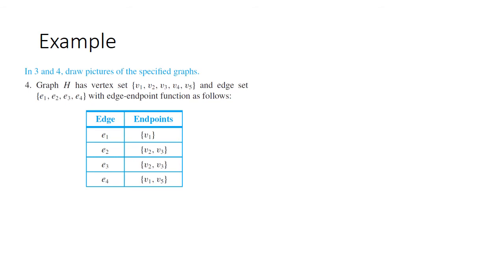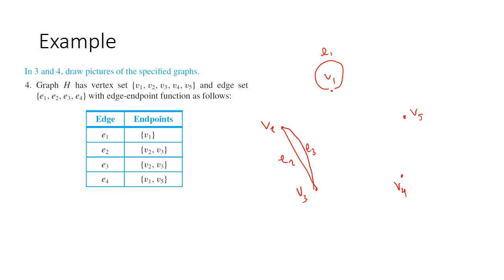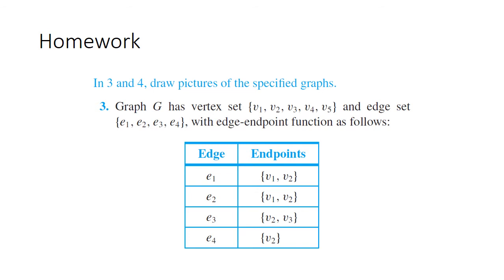Now let's do the reverse: given vertices and the edge-endpoint function, draw the graph. A good strategy is to put the vertices in a circle for best use of space. Edge e1 connects just v1 to itself — that's a loop. E2 connects v2 and v3. E3 also connects v2 and v3 — that's a parallel edge. E4 connects v1 and v5. Try doing the same for the other graph and check your answer in the back of the book.